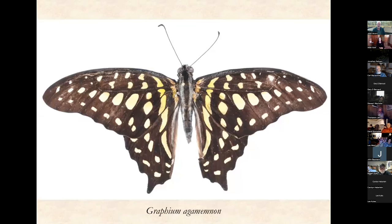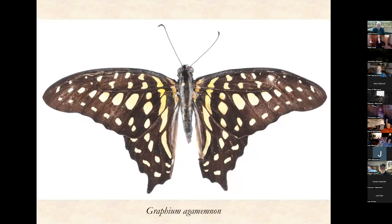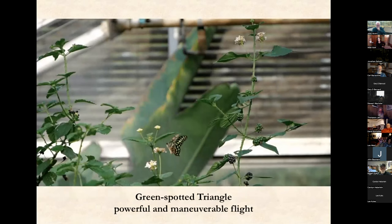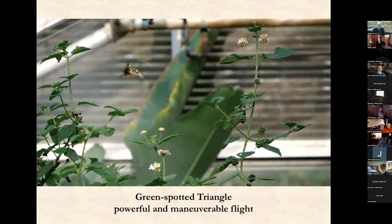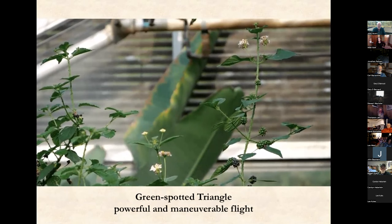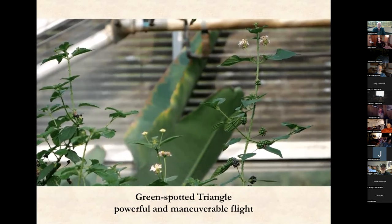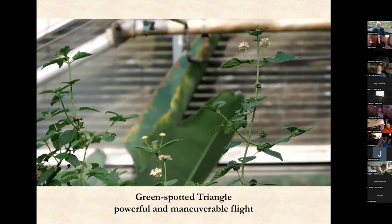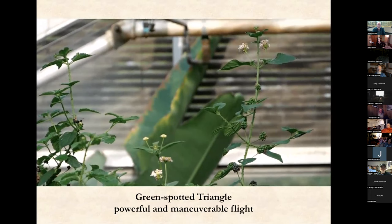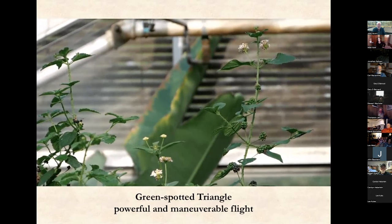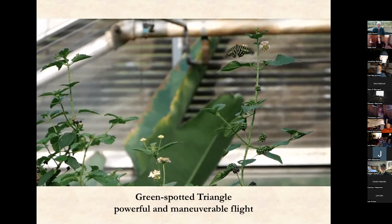Here's Graphium agamemnon — very powerful body, nice looking wings. You almost know before you watch it that it's going to be a very able flyer. Look at the control this thing has in the air — it's just an astonishing butterfly to watch. It's powerful and very maneuverable, able to do everything from sustained flight to flap-and-glide to hovering. Remember we're going at one tenth speed here — what seems like a second in the video is actually a very small fraction of a second in real time.